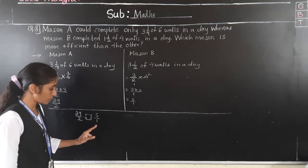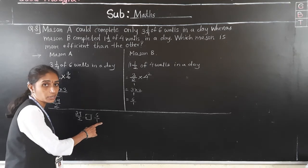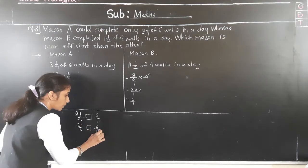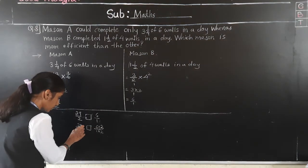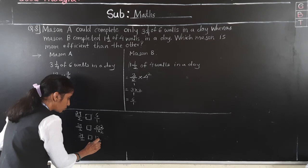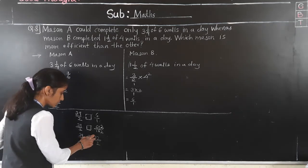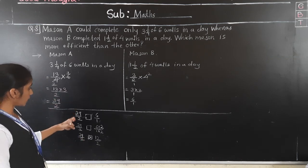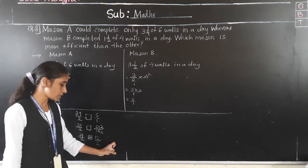Multiply 6 upon 1 by 2 on both numerator and denominator: we get 12 upon 2. Now compare: 39 upon 2 vs 12 upon 2 — the denominators are the same, so compare numerators. 39 is greater than 12, so Madison A is more efficient.